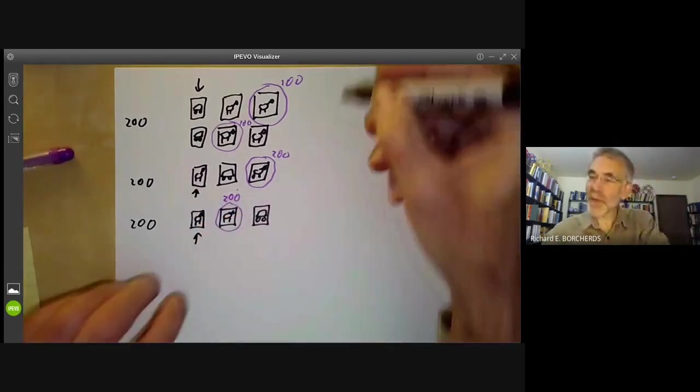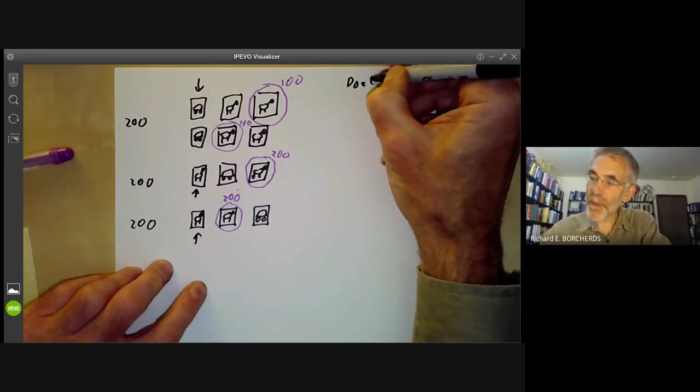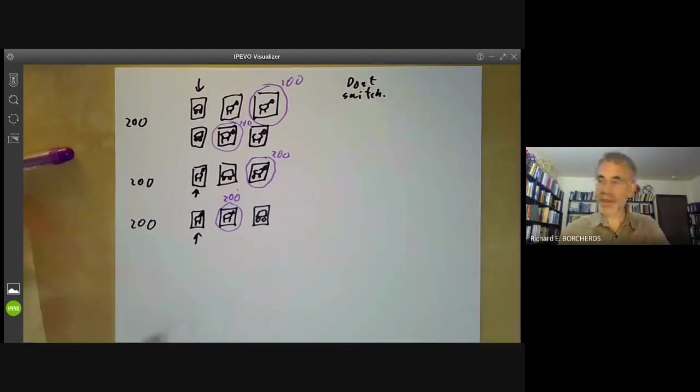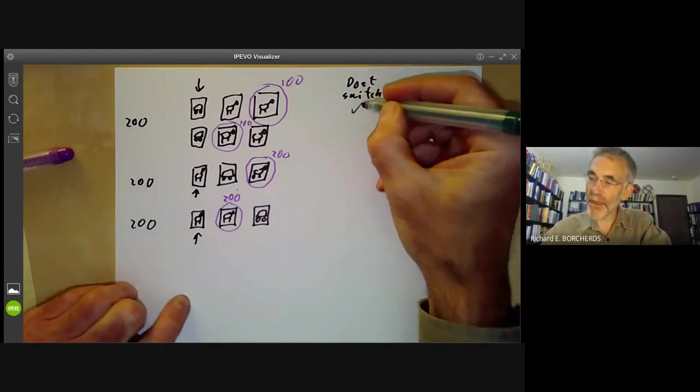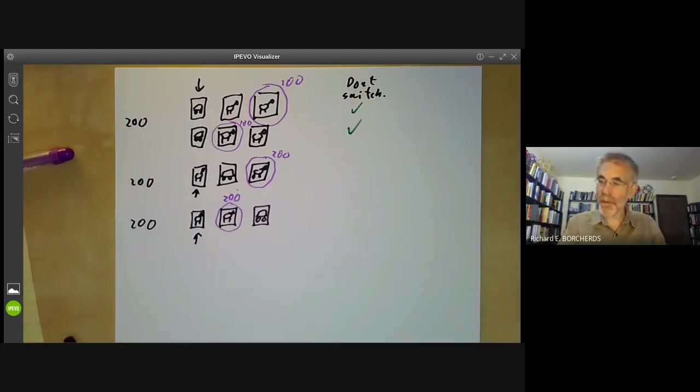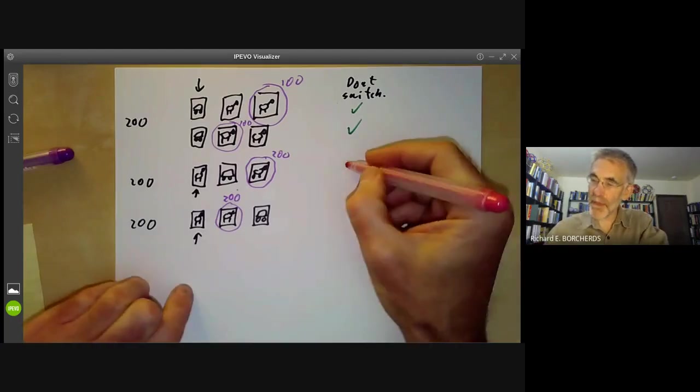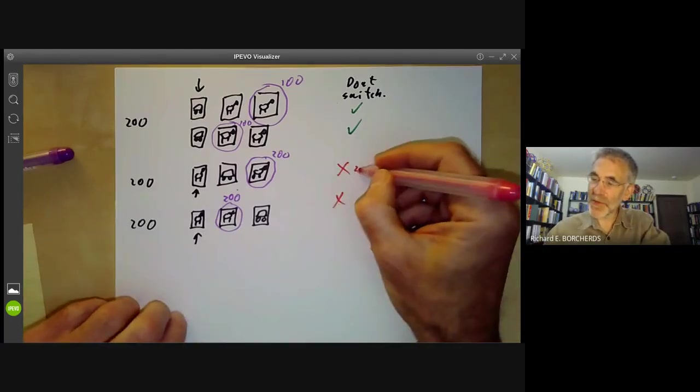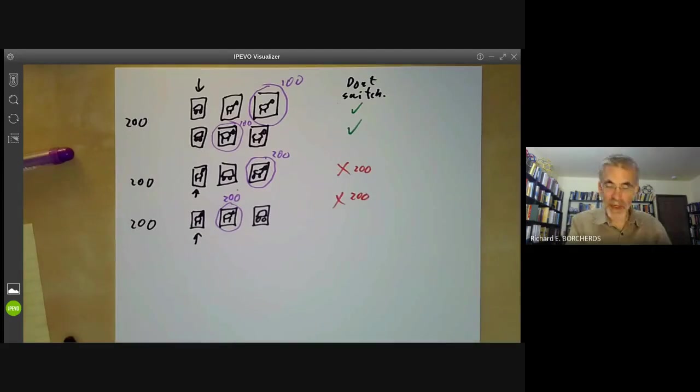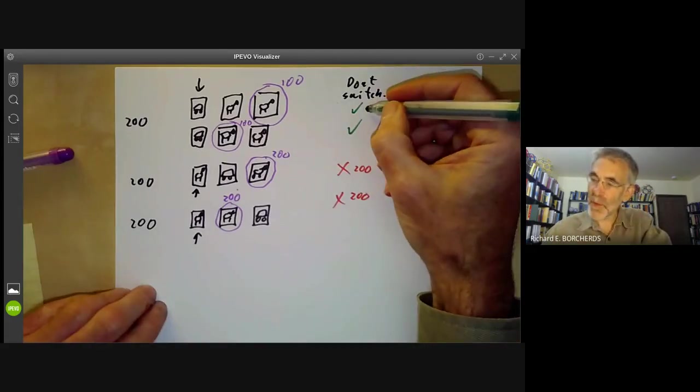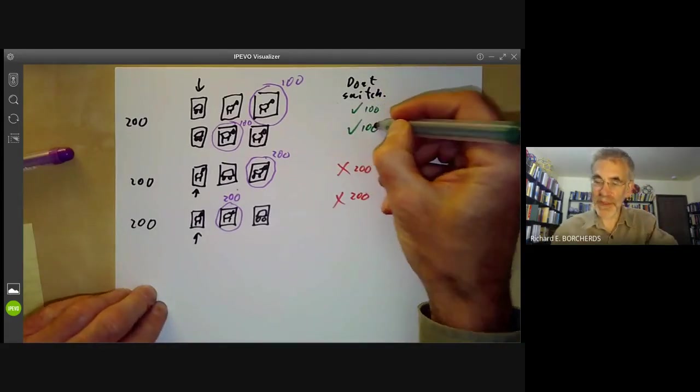So let's see what happens if you don't switch. Well, if you don't switch, you're going to win in these two cases. And you're going to lose in these cases. So here we lose 200 times. We lose 200 times. And we win 100 times there and 100 times there.